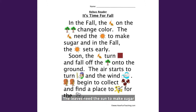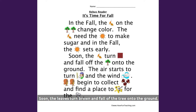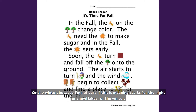The leaves need the sun to make sugar, and in the fall, the sun sets early. Soon the leaves turn brown and fall off the tree onto the ground. The air starts to turn cold, and the wind blows. Squirrels begin to collect acorns and find a place to sleep for the night or the winter, because I'm not sure if this is meaning stars for the night or snowflakes for the winter.